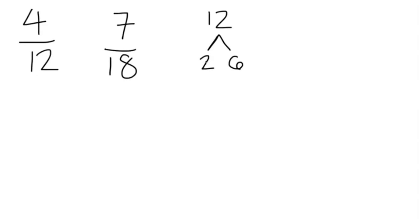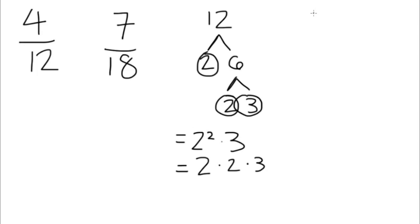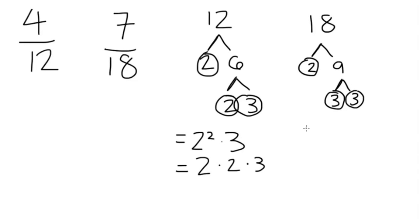Let's get started. Let's take four 12s and seven 18s. Step one is to prime factor the two denominators. Then list your prime factors so you can find the common factor. Third, circle the common prime factors.